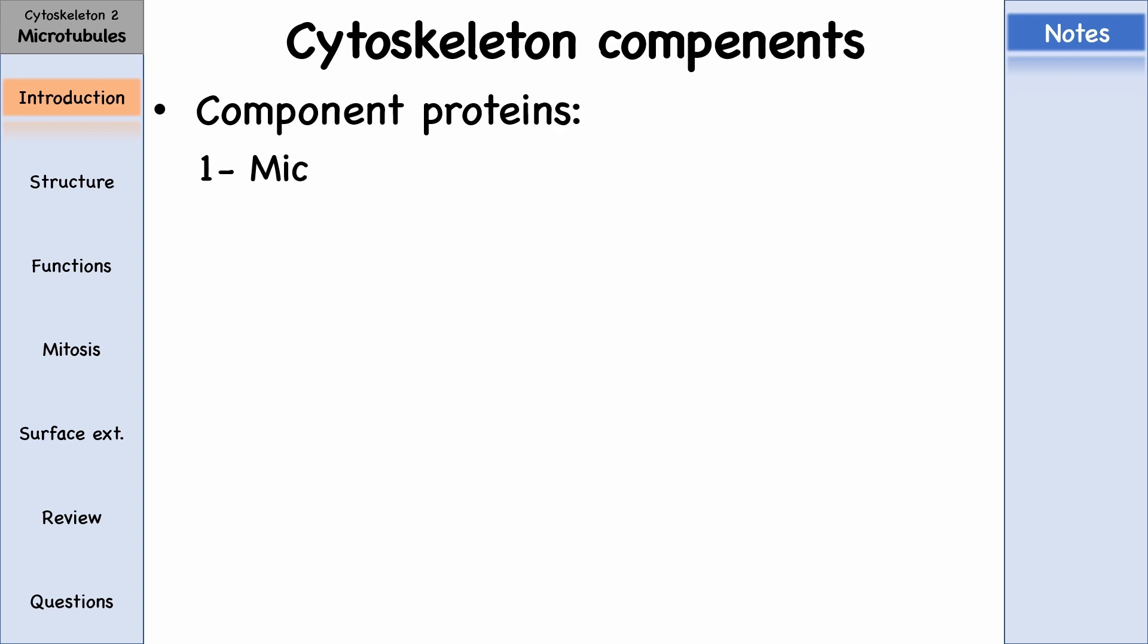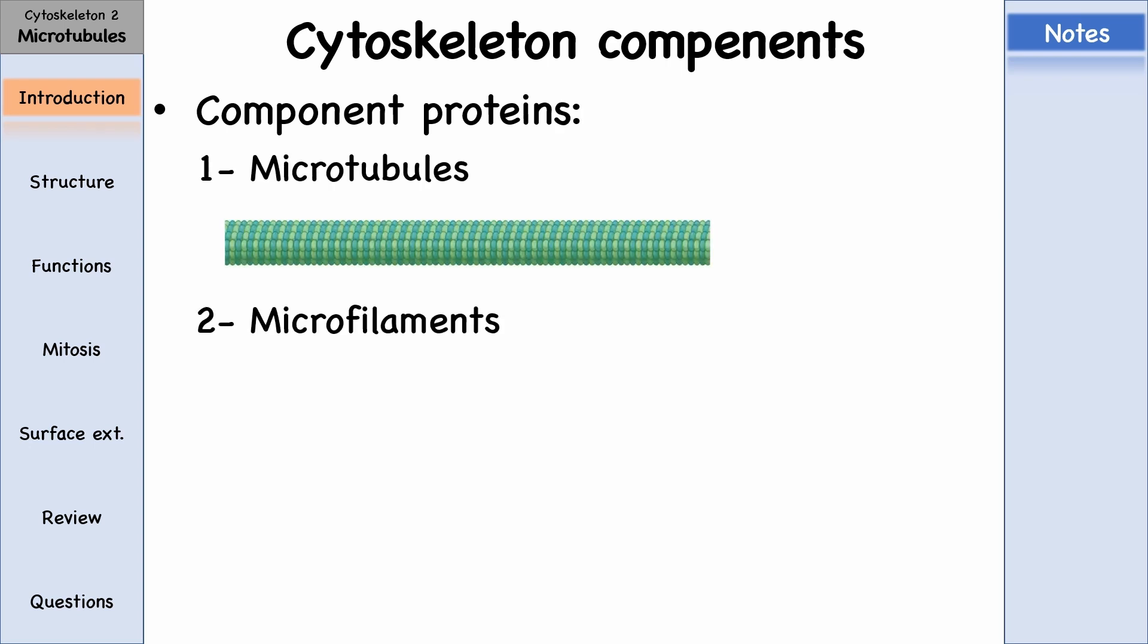In the previous lesson, we talked about the proteins that make up the cytoskeleton: microtubules, microfilaments, and intermediate filaments.